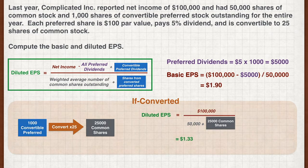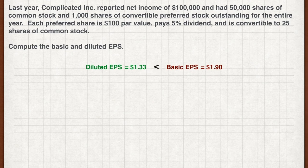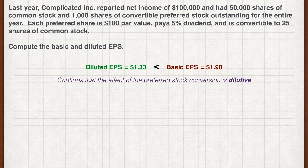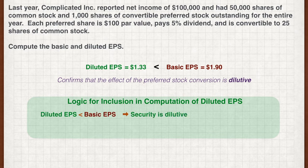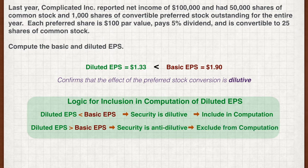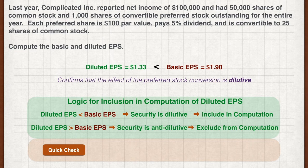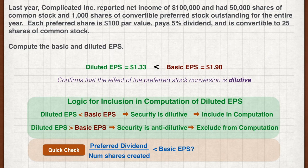The diluted EPS of $1.33 is lower than the basic EPS of $1.90, which confirms that the effect of the preferred stock conversion is dilutive. When a security is dilutive it must be included in the diluted EPS computation. If the answer had been higher than $1.90, the preferred stock would be anti-dilutive and we should not include the conversion effects. A quick way to check: divide the preferred dividend by the number of shares created upon conversion — for this example it is $0.20, which is less than basic EPS, confirming the convertible preferred stock is dilutive.